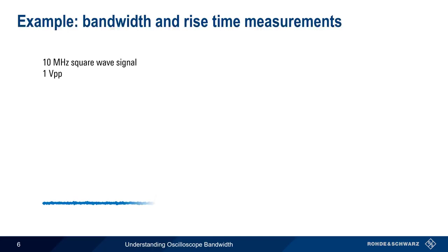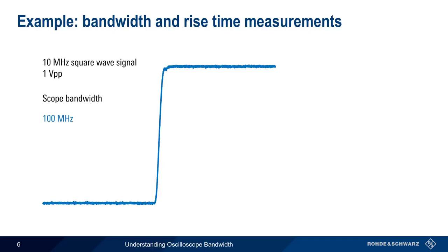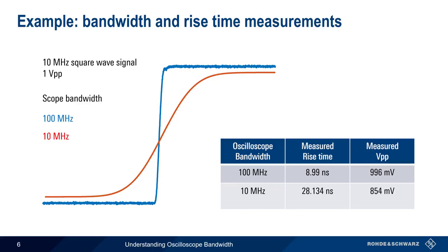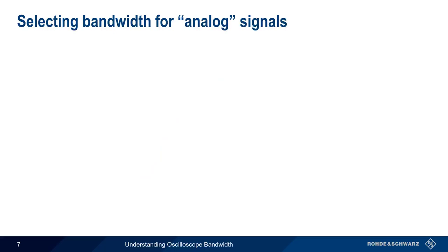This rounding of the edges of our square wave also leads to inaccurate rise time measurements. For example, let's look at a 10 MHz, 1 V peak-to-peak square wave signal using an oscilloscope with a bandwidth of 100 MHz. We see a fairly sharp edge with a measured rise time of just under 9 nanoseconds, and a measured peak-to-peak voltage of just under 1 V. However, if we measure the same signal using a scope with a bandwidth of only 10 MHz, our measured rise time is now over 28 nanoseconds, and the measured peak-to-peak voltage has decreased to only 854 mV. Later in this presentation, we'll discuss both why this difference occurs and how to choose an appropriate bandwidth for a given signal type.